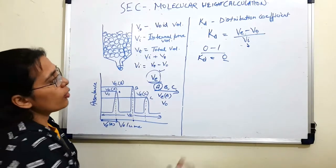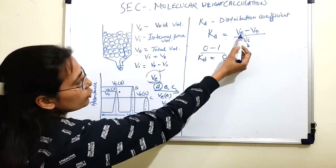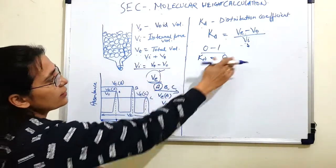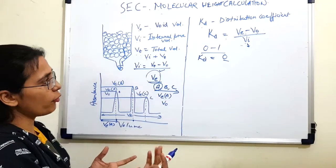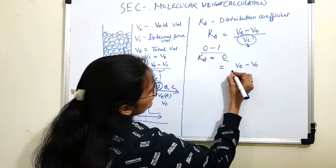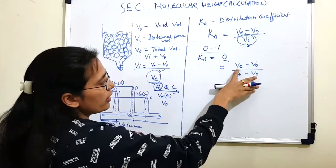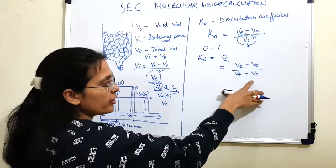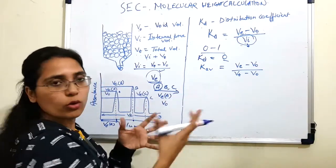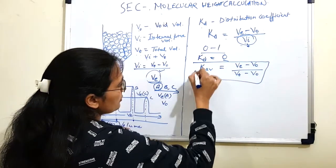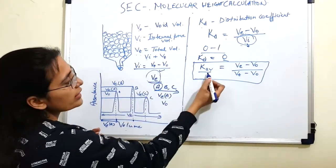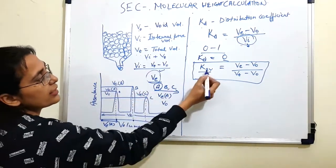You can calculate the elution volume and void volume from the graph, but you cannot directly get the internal pore volume from the graph. However, since Vi = Vt − V0, you can substitute this into the Kd formula. This gives a new term called Kav (K average): Kav = (Ve − V0) / (Vt − V0). This Kav is no longer called the distribution coefficient, but it is used to calculate the molecular weight from the graph since all values in the formula can be obtained directly from the graph.